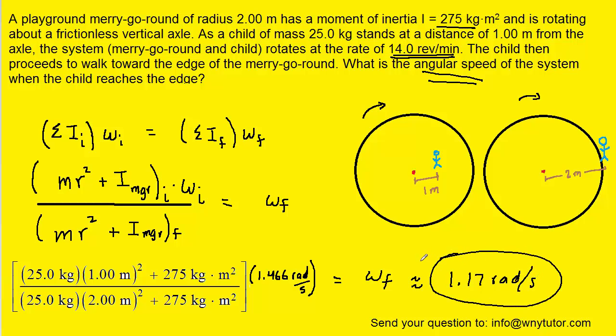And when you work this all out you should get approximately 1.17 radians per second as the final angular velocity of the system. Now I called it angular velocity but technically it's actually the angular speed since we're not concerned with the direction of this value. So we can just say that the angular speed is 1.17 radians per second.